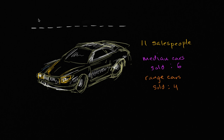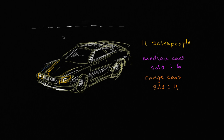So maybe one person sold five cars, the next person sold seven cars, maybe the next person sold 10 cars — that's how we would do it. We're going to record all of that. But then we're told that the median cars sold is six. So if we ordered all of these numbers from least to greatest...